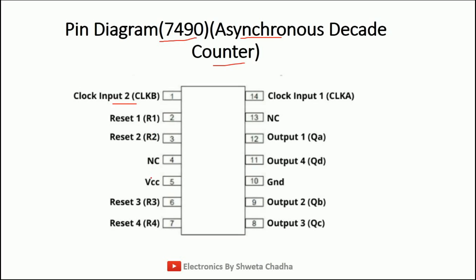PIN 4 is no connection. PIN 5 is VCC. PINs 6 and 7 are again reset PINs. PIN 8 is QC output. PIN 9 is QB output. PIN 10 is ground. PIN 11 is QD output. PIN 12 is QA output. PIN 13 is no connection. PIN 14 is clock number 1 — that means the clock to the first flip-flop.